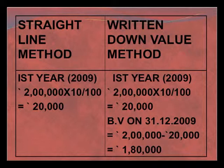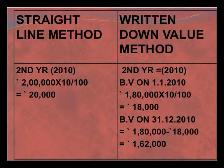In the second year, under the straight line method we again charge the constant amount of depreciation at 10%, which is rupees 20,000. But under the written down value method, we calculate depreciation not on 2 lakh but on the book value remaining at the end of the first year, which is 1 lakh 80,000. So depreciation for the second year is 10% of 1 lakh 80,000, which comes to 18,000. The book value at the end of the second year is 1 lakh 80,000 minus 18,000, which is 1 lakh 62,000.